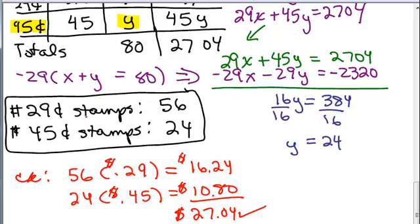So the number of 29-cent stamps is, there are 56 of those, and there are 24 of the 45-cent stamps.